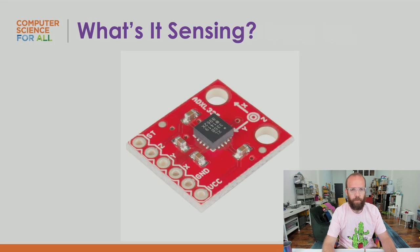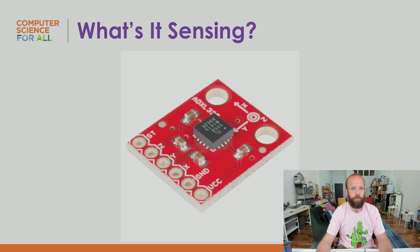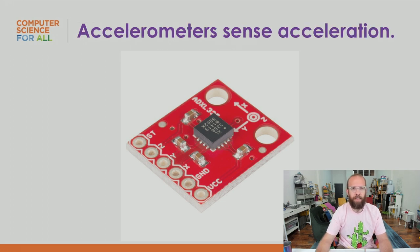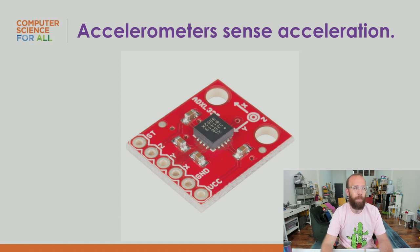Here's an accelerometer — you can see XYZ on it. It senses acceleration. Typically, accelerometers are packaged in what's called 6 DOF (6 degrees of freedom) or 9 DOF (9 degrees of freedom), combining acceleration, velocity, and orientation. So it can tell how fast something is moving, how fast it's accelerating, and what position it's in. They're usually packaged together, but you can get them separately if you're only looking for one set of data.